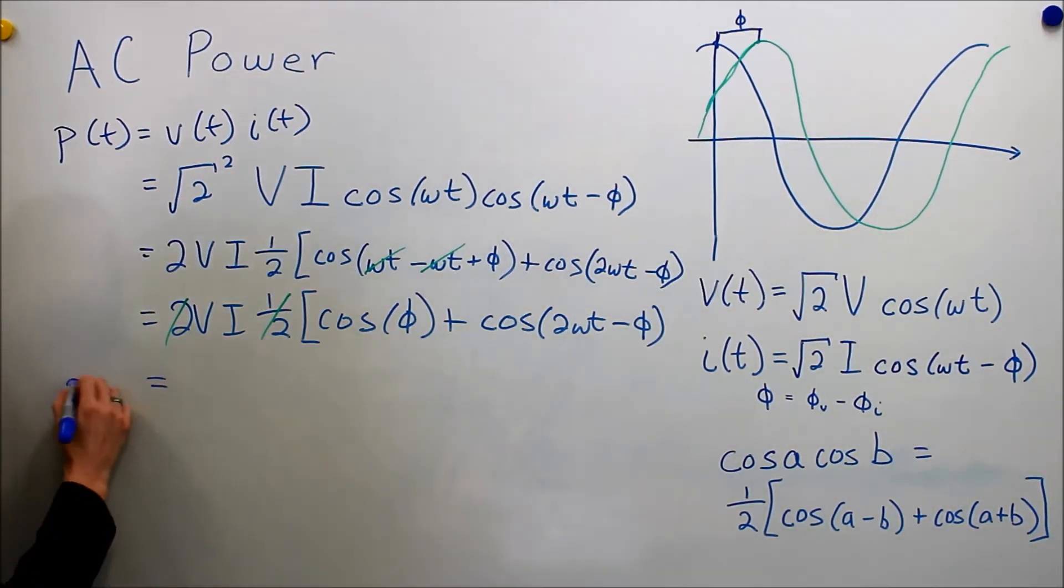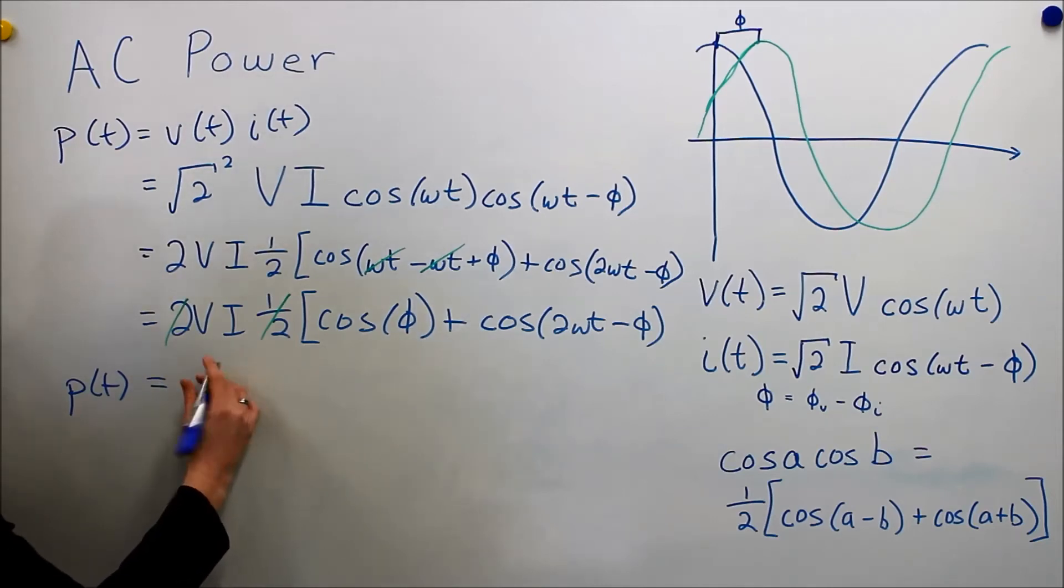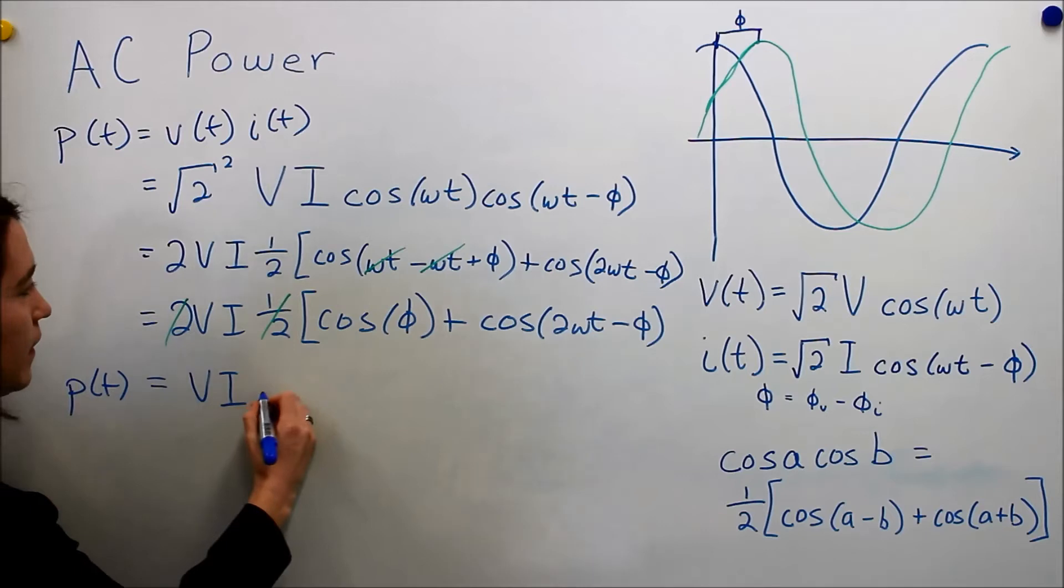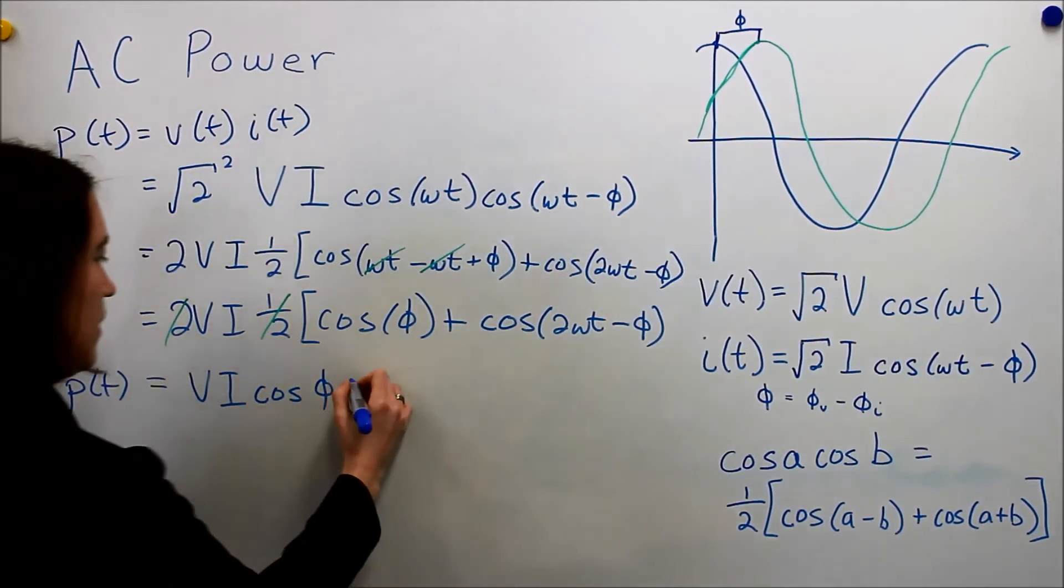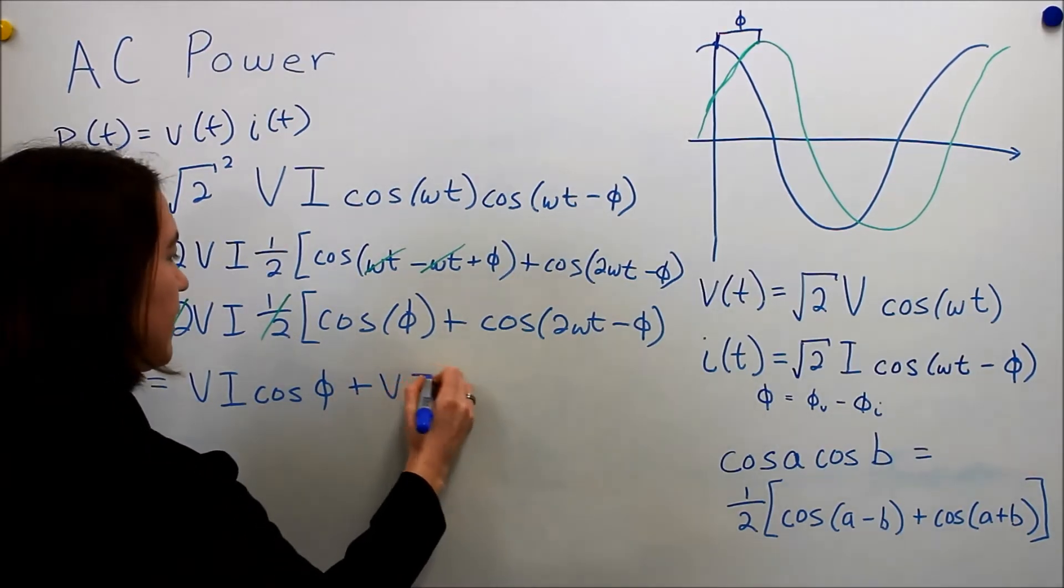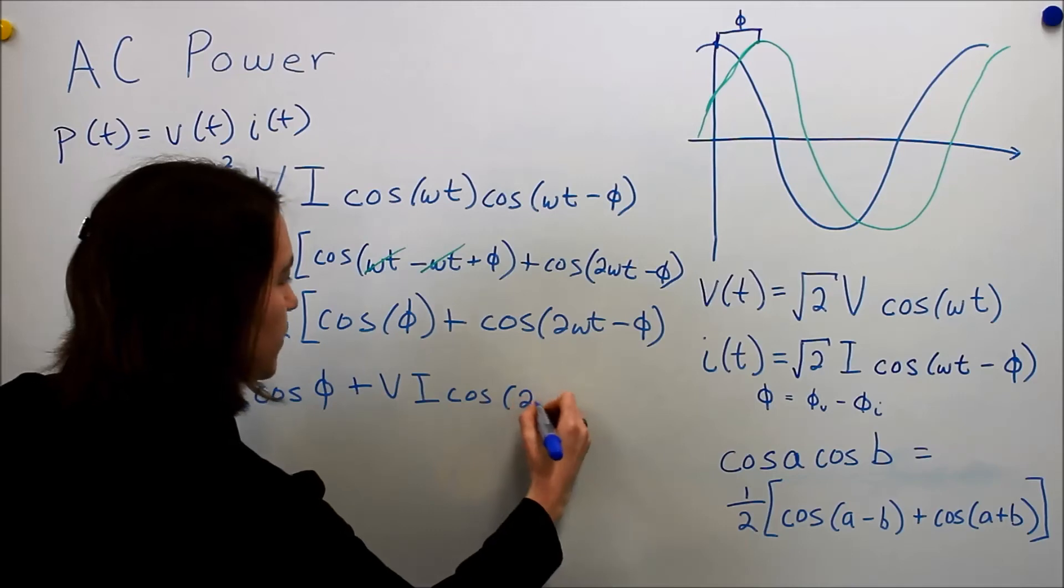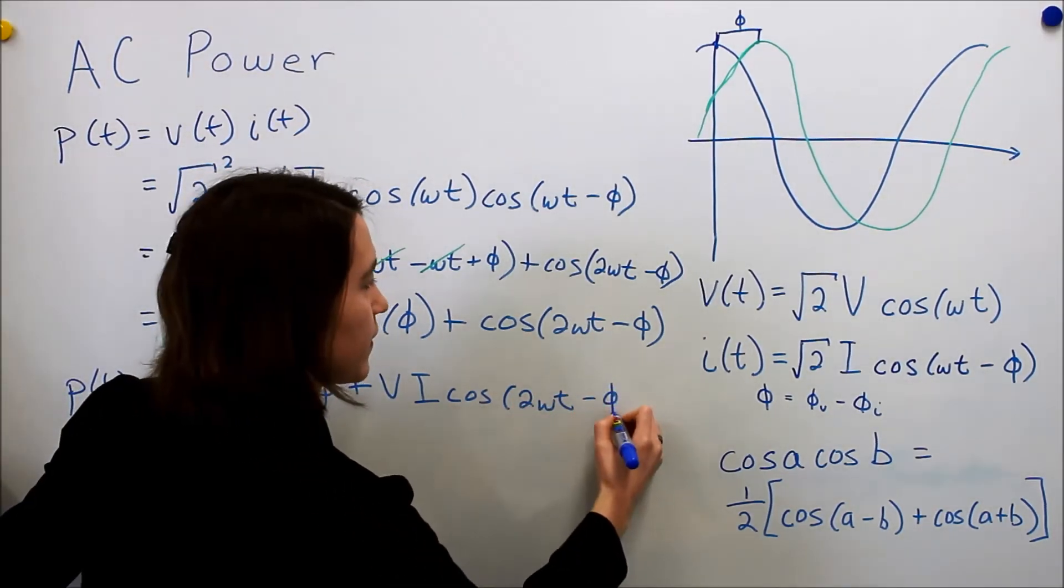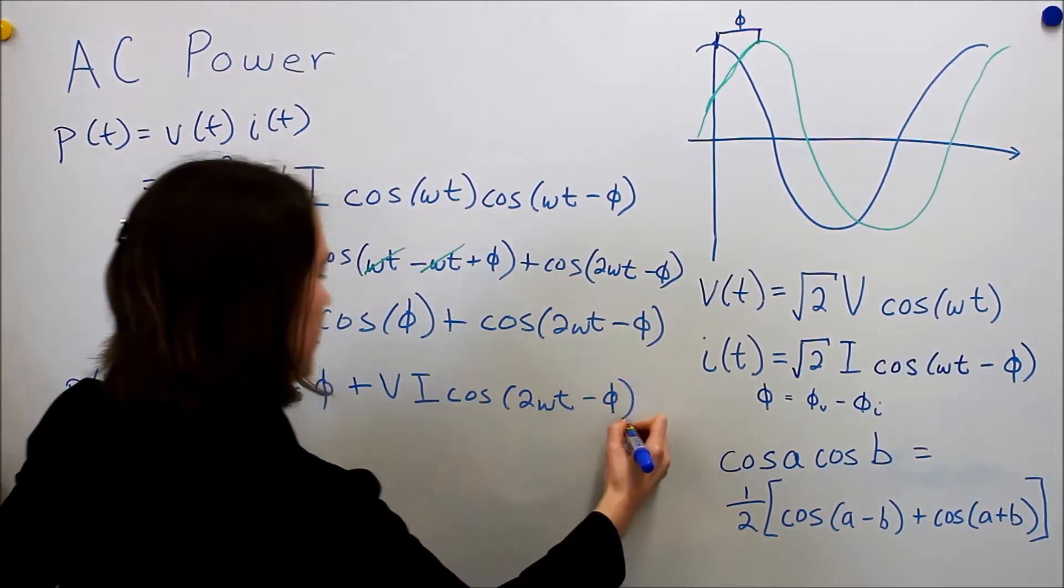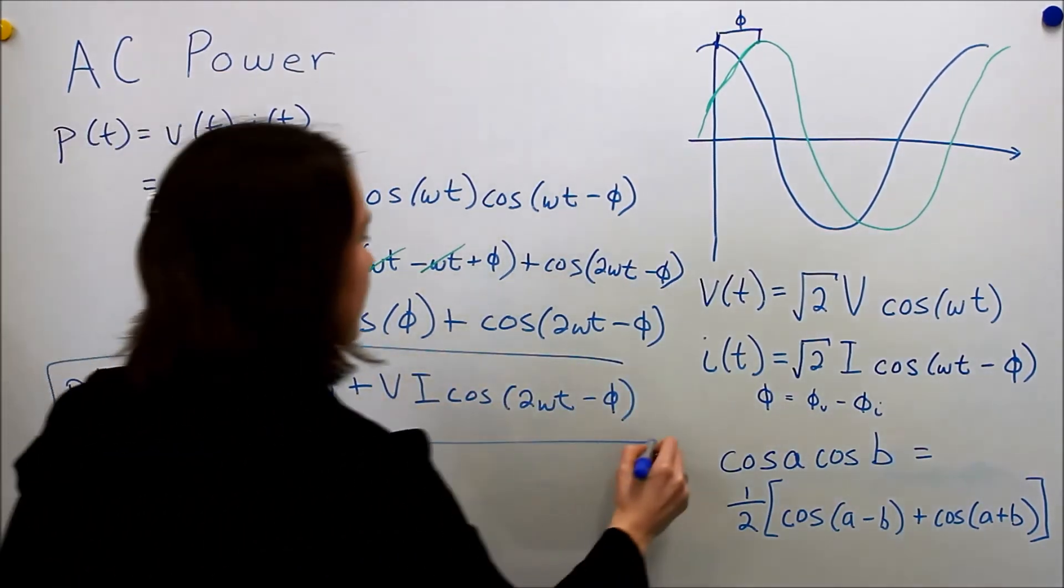Okay, so the instantaneous power is equal to, and we're going to distribute this out. So vi cosine of the phase difference phi plus vi cosine of 2 omega t. So 2 times our frequency before with some phase shift. Okay, so this is our expression for instantaneous power.